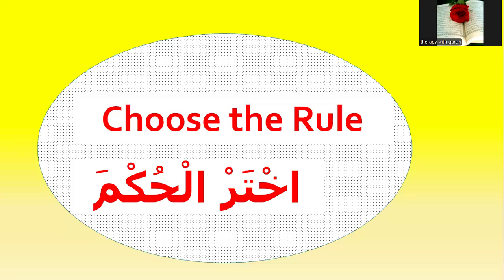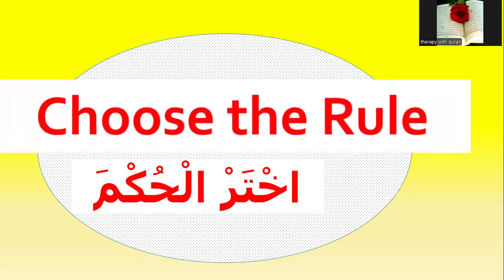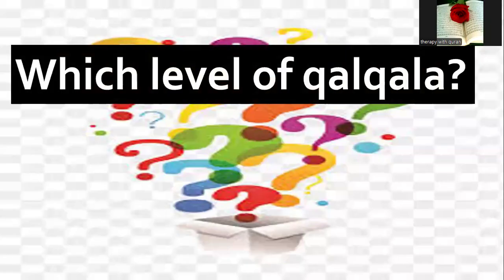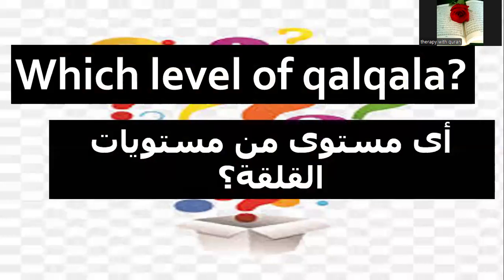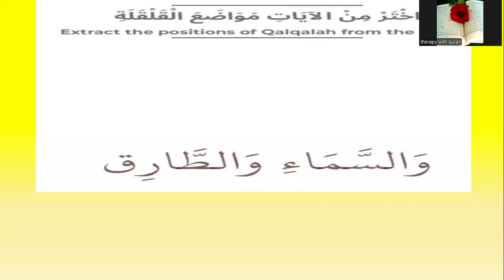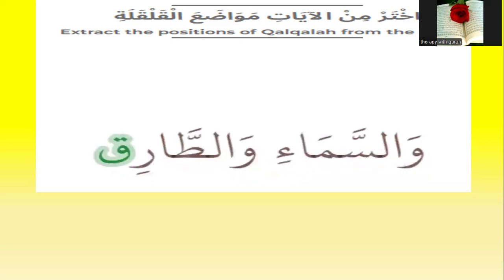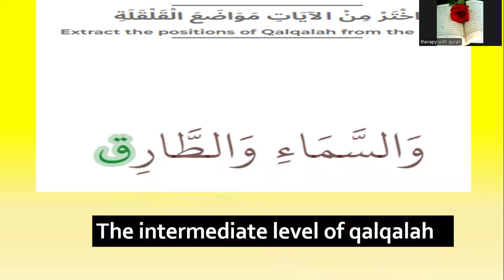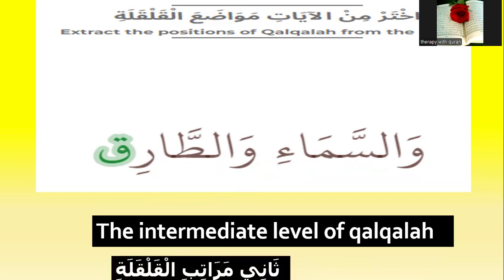Let's go to the last group of questions: choose the rule. Iftaar Al-Saariq — which level of qalqala? Number one: Wal-Samaah Wal-Saariq — it has the qalqala letter in the middle, so it's like a little bounce. Yes, little bounce. Wal-Saariq — the qalqala letter — which level? The intermediate level of qalqala. Yes, very good. Because it stops with sukoon — that's the second level of qalqala.